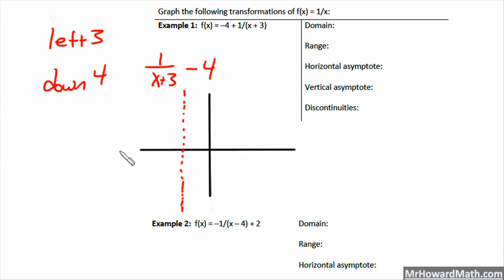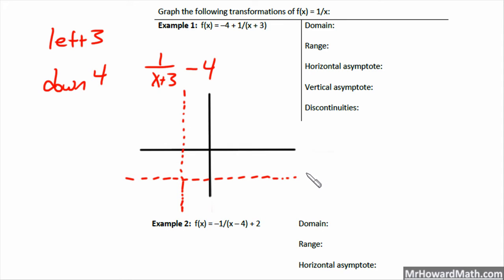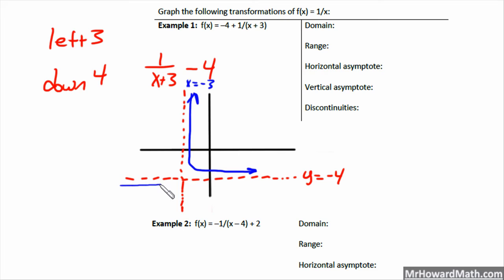The horizontal asymptote would normally be along the x-axis, but we move it down 4 to a y-value of negative 4. So the horizontal asymptote is y equals negative 4, and the vertical asymptote is x equals negative 3. We put the graph in — with no reflections, it lands in the upper right and lower left sections relative to the asymptotes.